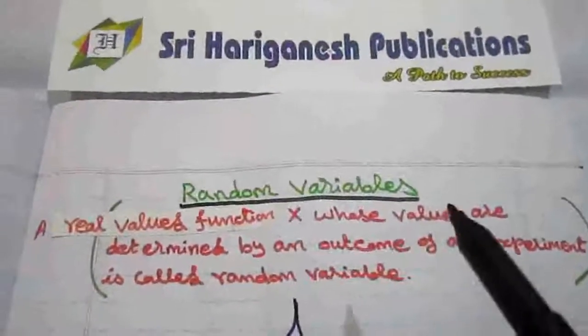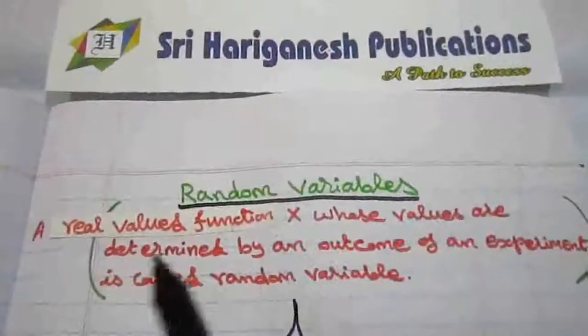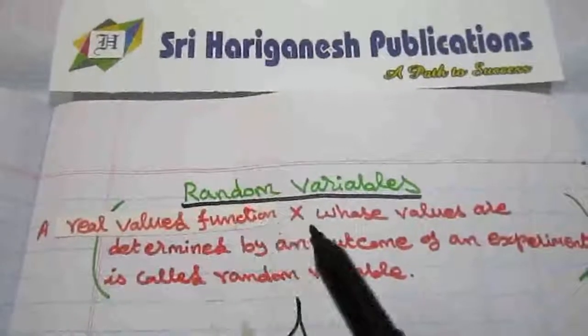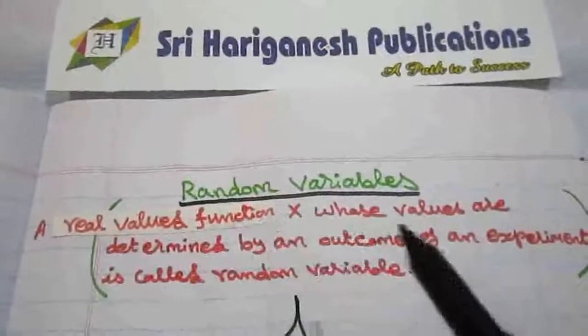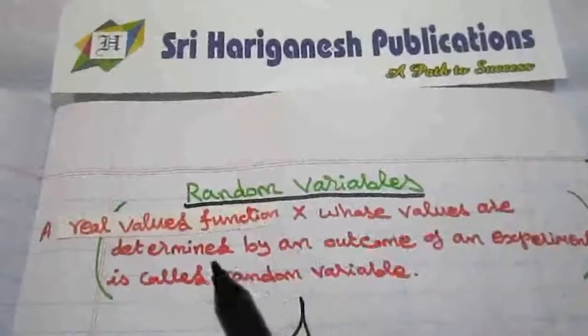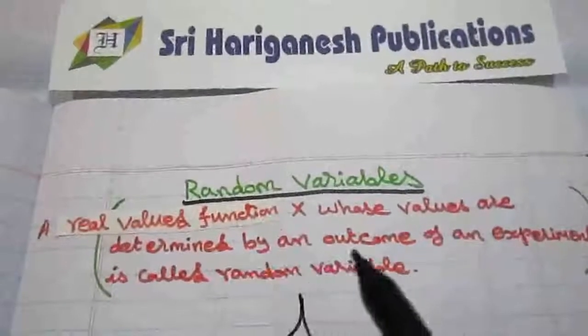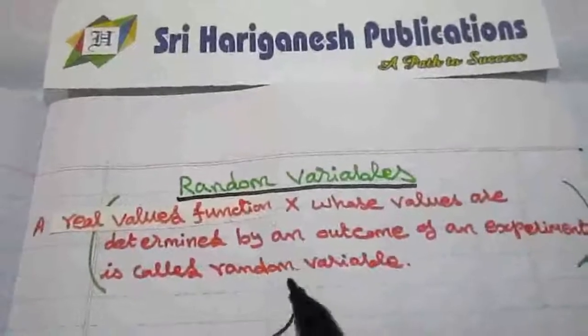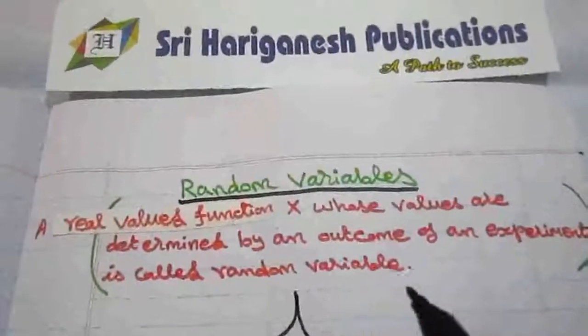Random Variables. A real valued function x, whose values are determined by an outcome of an experiment, is called a random variable.